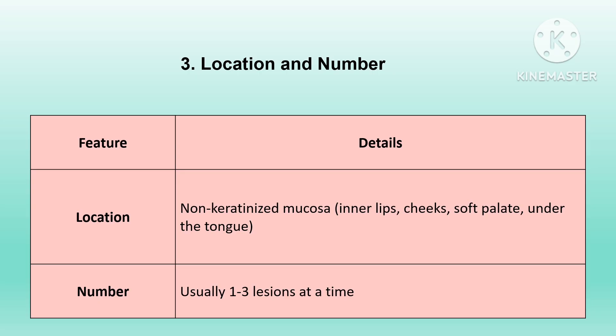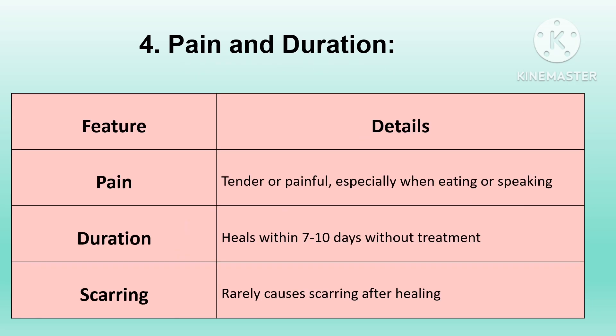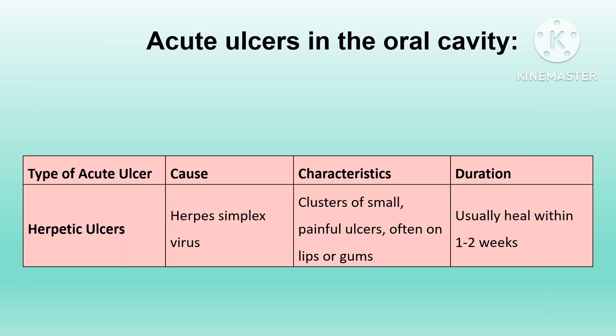These ulcers are usually painful, especially when eating and speaking, due to their location in sensitive areas, though pain is generally mild to moderate. Minor aphthous ulcers heal within 7–10 days without treatment and usually do not cause permanent scarring once resolved.